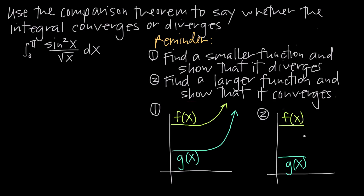Or we can draw the opposite conclusion: starting with f, if we can show that f converges to a particular value, then because g always has to be below f, we can say that g also converges to a particular value. If g diverged, it would cross the graph of f, which we can't have. So if g diverges it proves f diverges, and if f converges it proves g also converges — those are the only two conclusions we can draw from the comparison theorem.